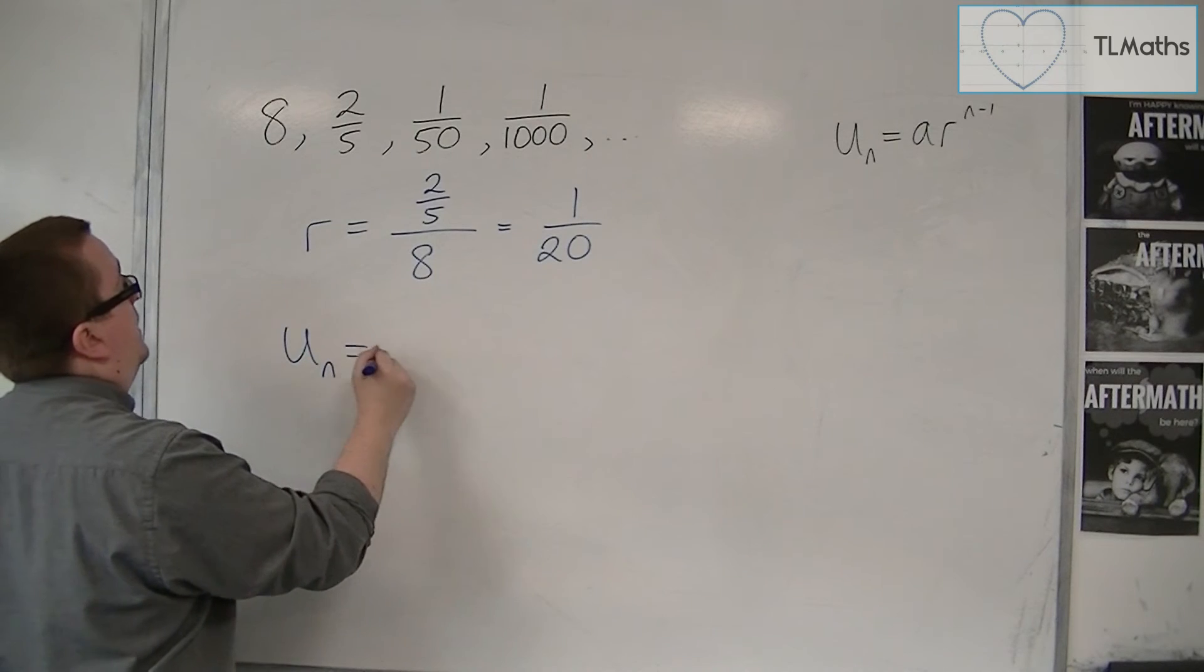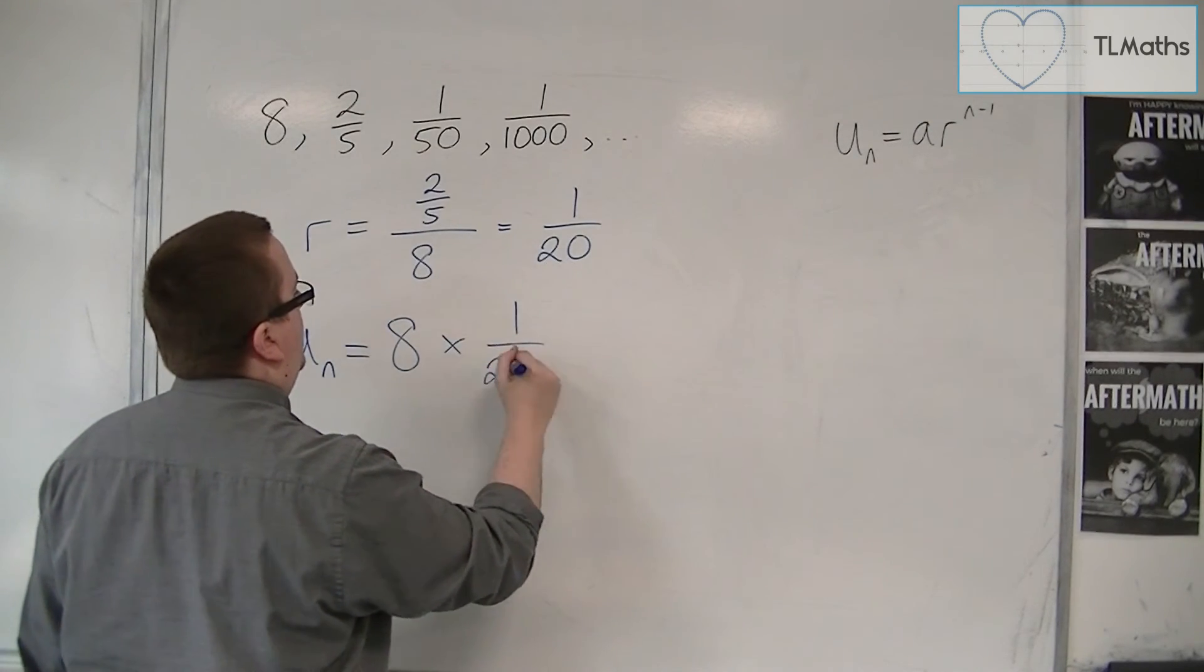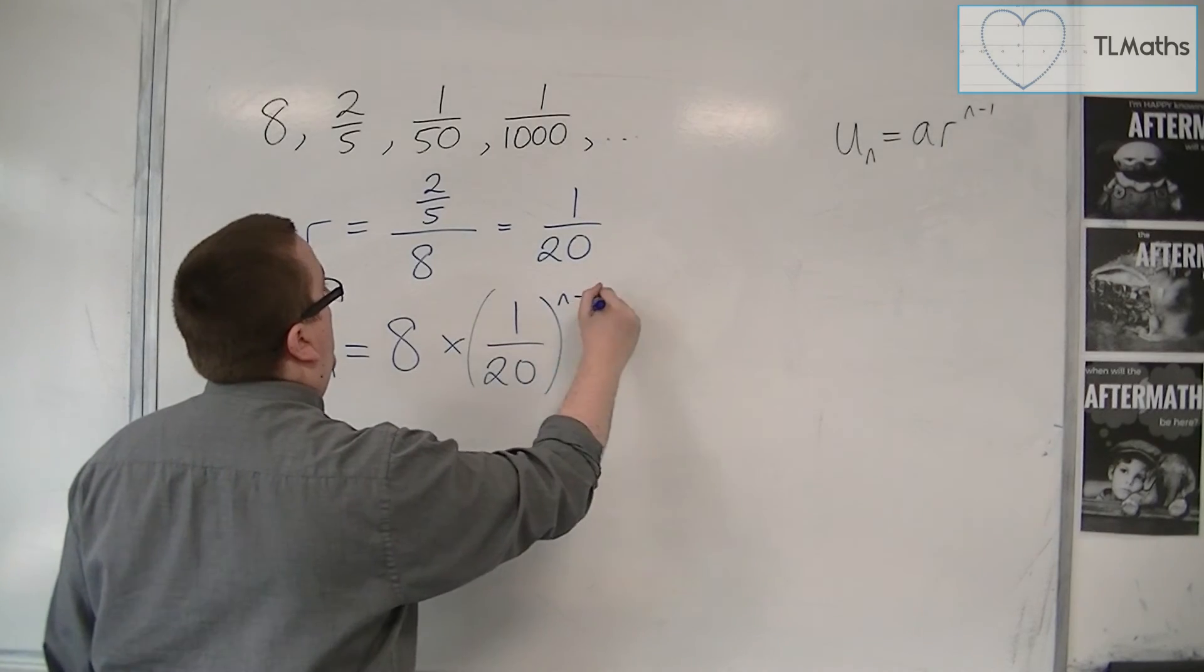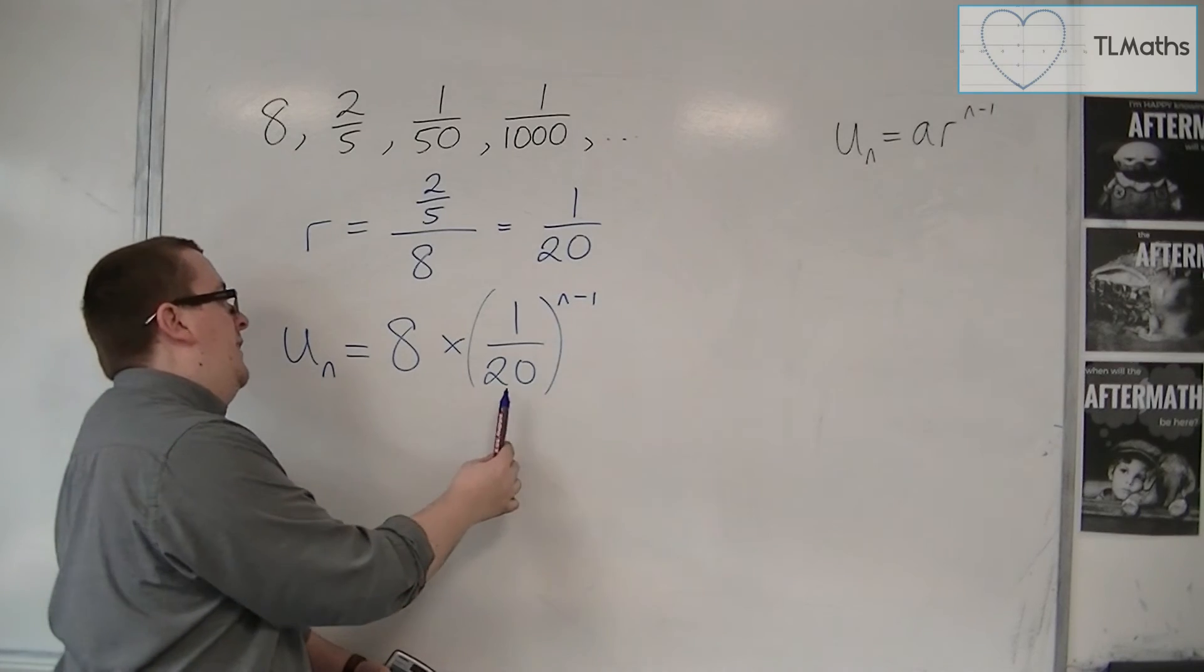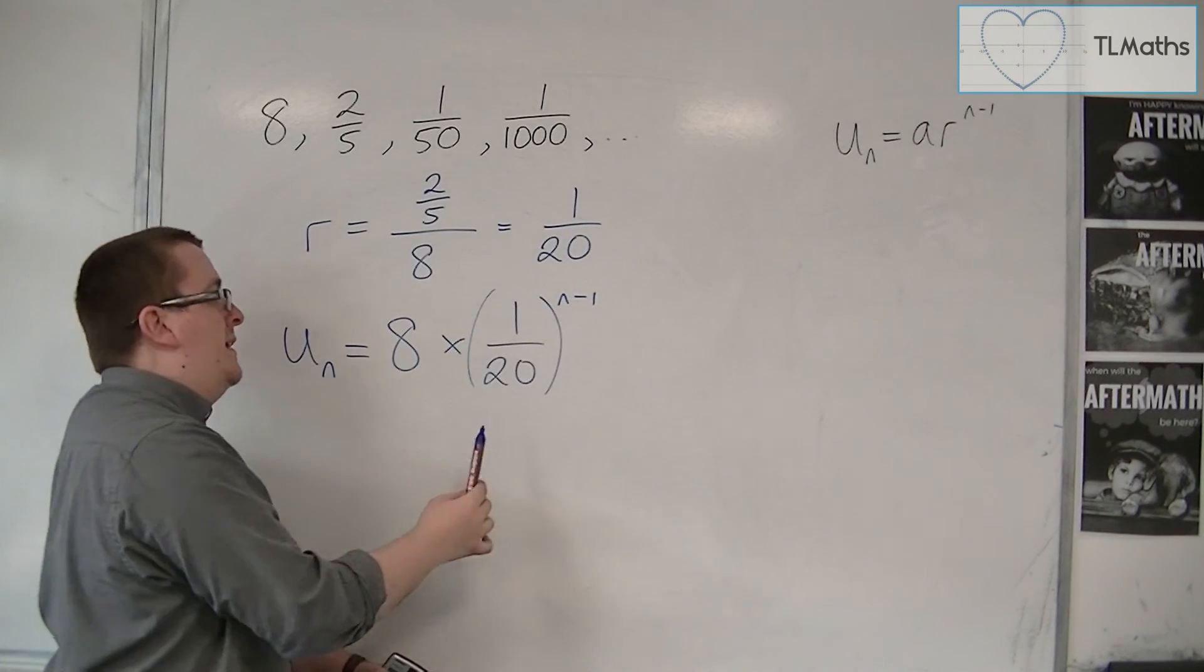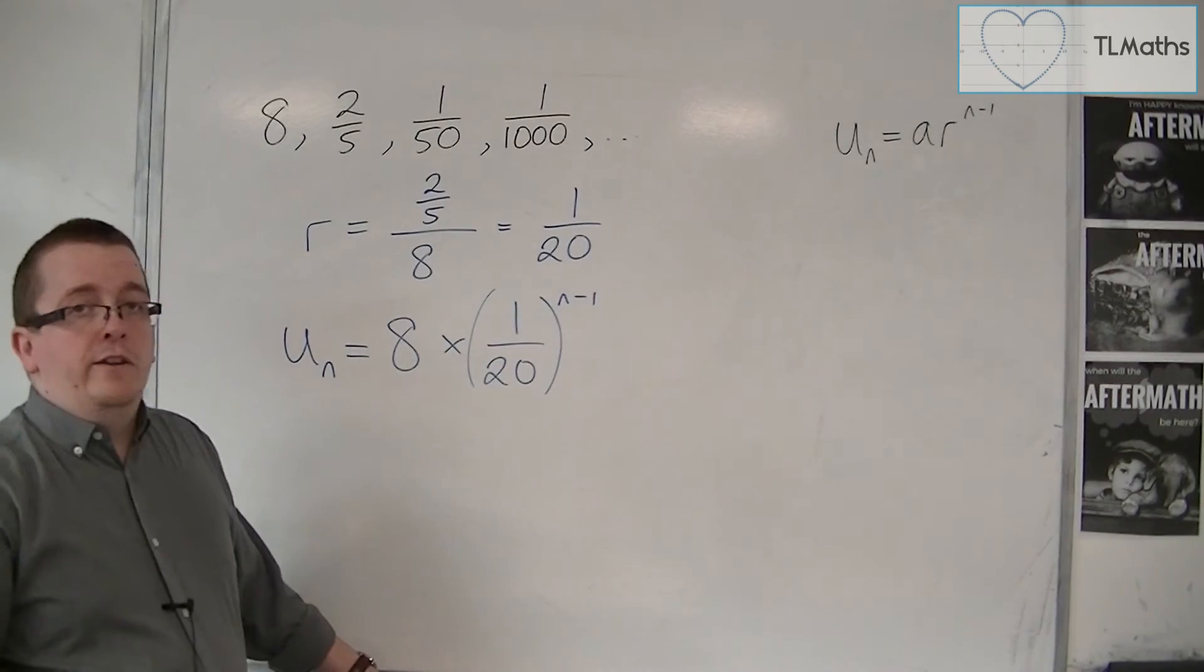So the nth term is 8 times 1 over 20 to the n minus 1. Now make sure that if it is a fraction like this, that you put a bracket around the fraction so that then you can write it to the n minus 1.